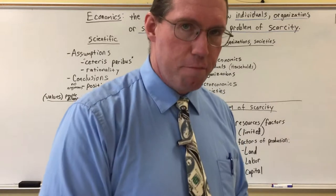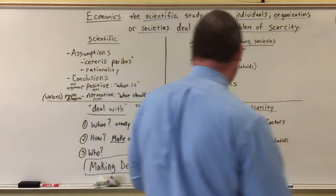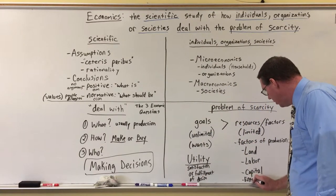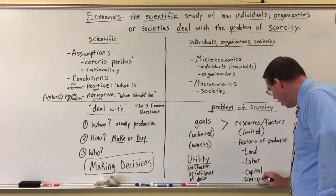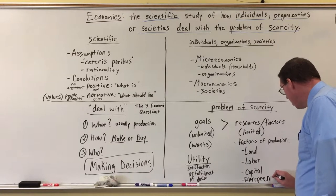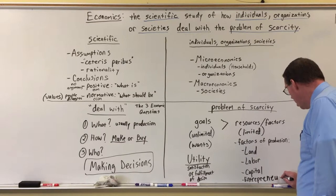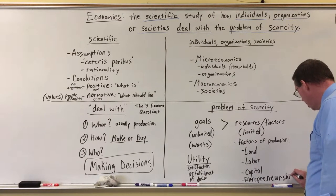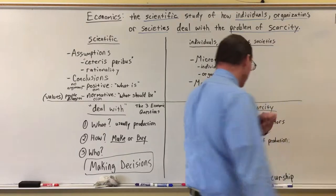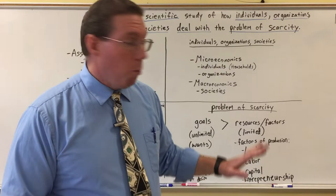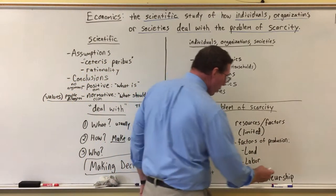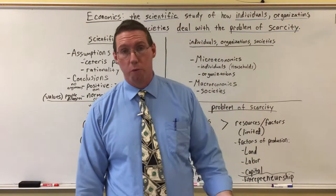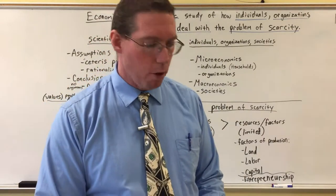Most textbooks indicate a fourth factor of production, which we call entrepreneurship. I'm going to write it down, but again, we are really only going to focus on the three factors of production: land, labor, and capital.